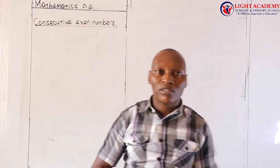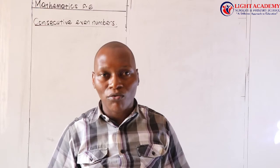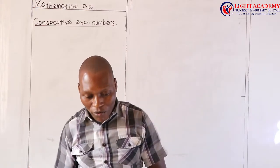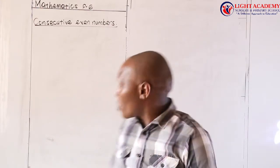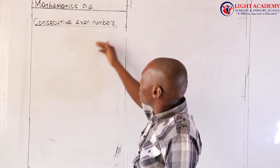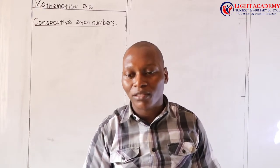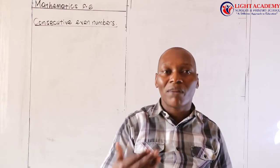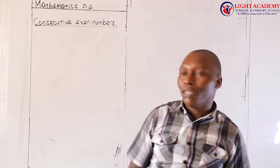So if I say consecutive counting numbers, I look at the numbers — the natural numbers we use in counting — like number one, number two, number three, number four, and so on, in that right order without skipping any of them. When I talk about consecutive even numbers, after understanding what the word consecutive means — consecutive means giving numbers in their right order of either increasing or reducing.